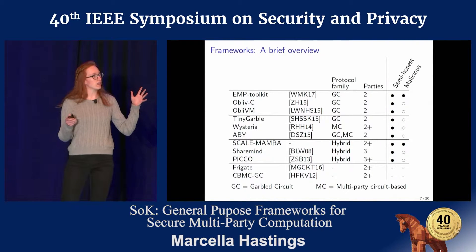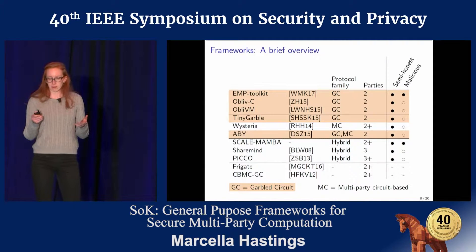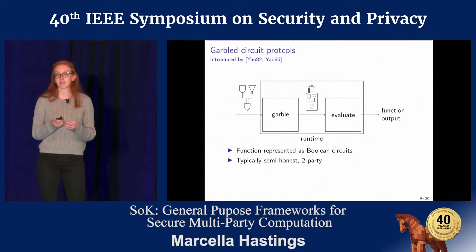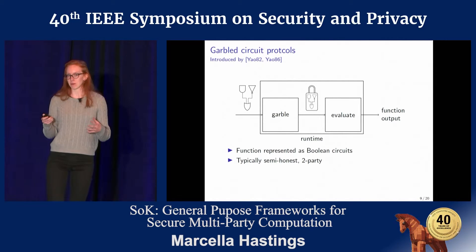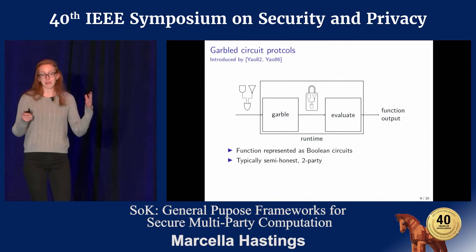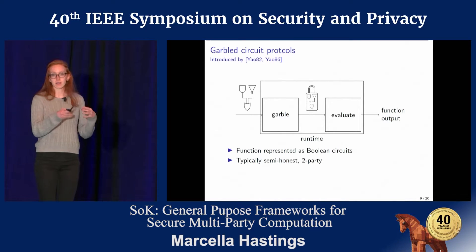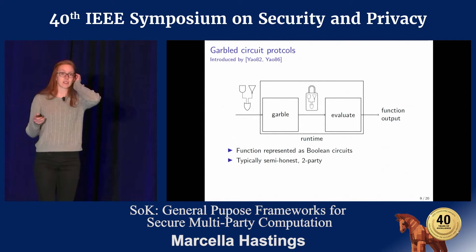We also created a loose taxonomy of three different protocol families. The first is garbled circuit protocols, first introduced in the 1980s by Andrew Yao and continuously developed since then. While theorists have produced a wide variety of settings in the garbled circuit model, in practice they're almost all implemented as semi-honest two-party protocols, where one party garbles or encrypts the circuit and sends it to the other party who evaluates it based on their input. These typically represent functions using Boolean circuits.